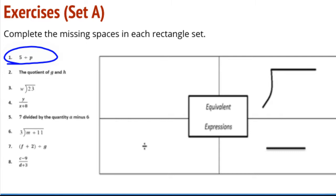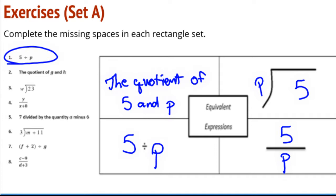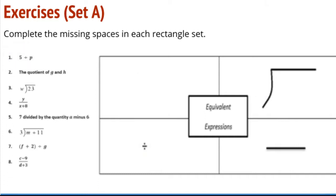we have 5 divided by P, so the quotient of 5 and P. And we've got 5 divided by P, and 5 divided by P, and 5 divided by P. So right now we're not doing any computation or anything. We're simply reading these expressions and putting them into these different forms. So another good one to look at. Number 4 might be a good one. Take a look at that and think about how you are going to make that look in all of these different forms.